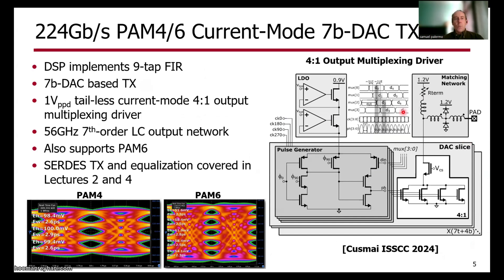This design achieves one-volt peak-to-peak differential output swing with a tailless current-mode output driver that also performs the final four-to-one output serialization. To achieve very high bandwidth, they utilize a 56 gigahertz 7th-order LC output network. Due to the flexibility of the DSP, it can also efficiently support PAM6 modulation. We're going to cover key SERDES transmitter and equalization topics in lectures two and four.